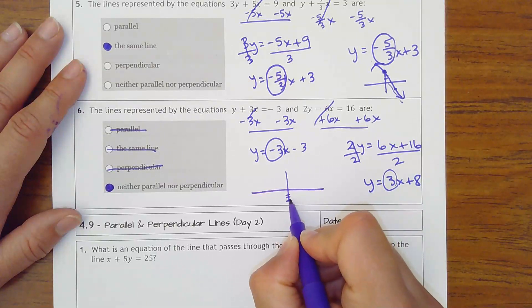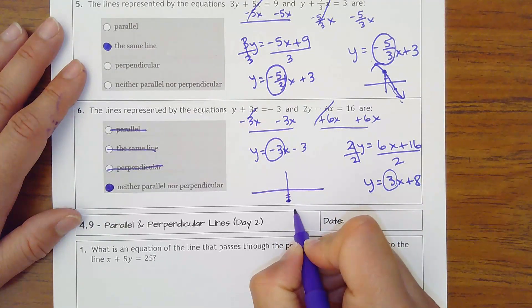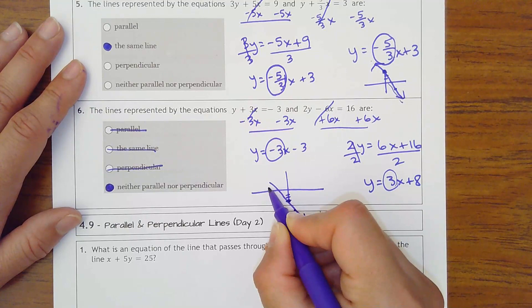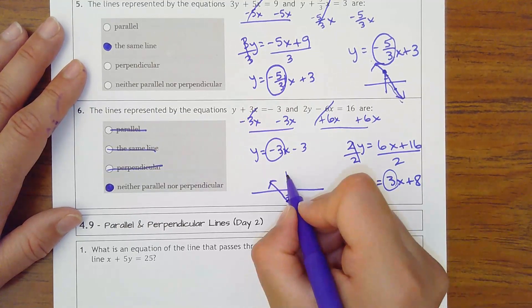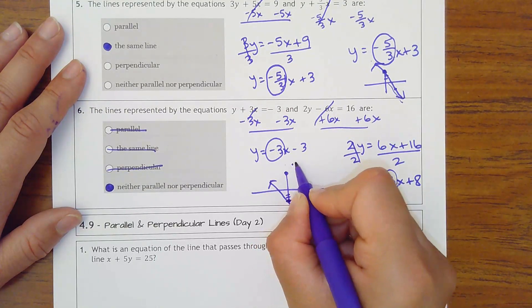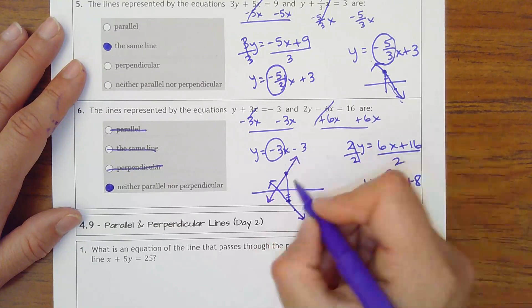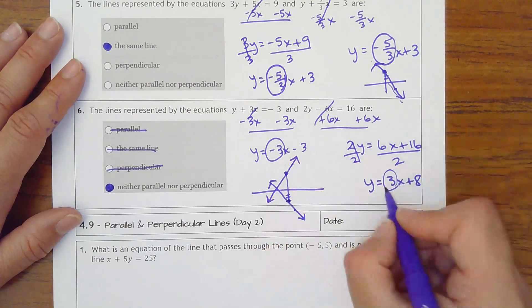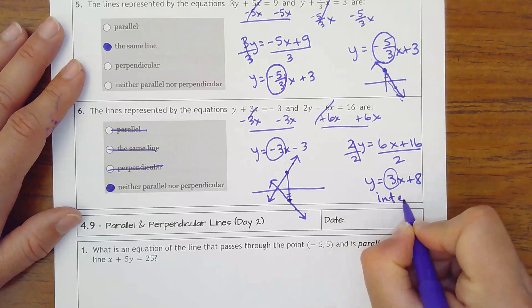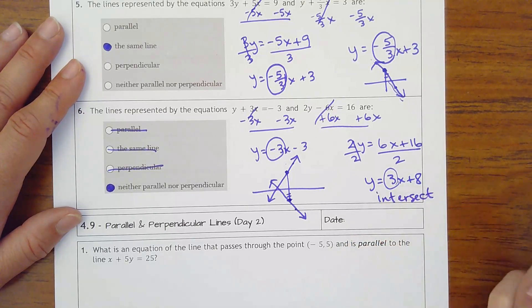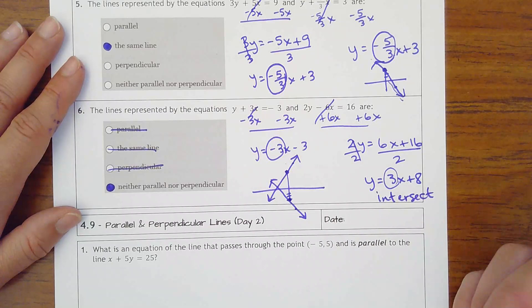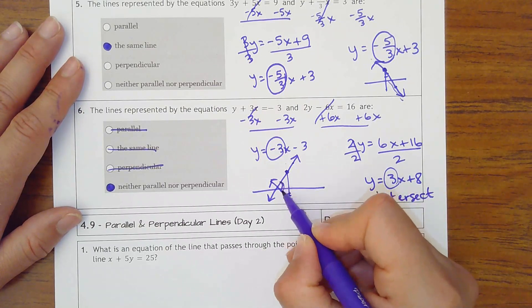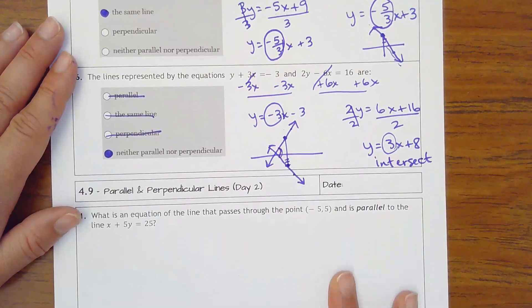So if this one's got a y-intercept of negative 3 and it's going down 3, right 1, this line's going to look like this. This one's starting up at 8 and it goes up 3, right 1. So they're not parallel. They're not perpendicular, but they do, they intersect is what they're doing. They intersect. As long as the slopes aren't the same, they're going to intersect. But they're just not making 90s right here. Making maybe something bigger or smaller than that.